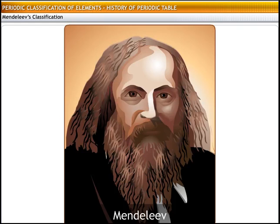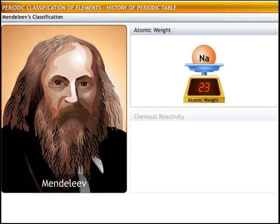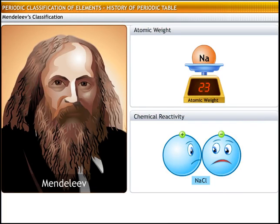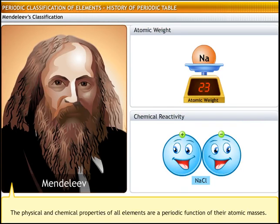Mendeleev based his work on the research by Newlands and took it further. He felt that effective grouping of elements and prediction of properties could be based on two parameters: atomic weight and chemical reactivity. Mendeleev's periodic law states that the physical and chemical properties of all elements are a periodic function of their atomic masses.